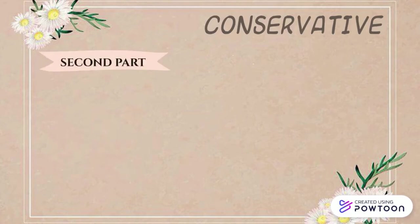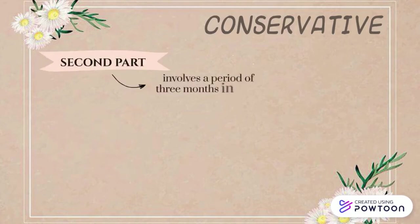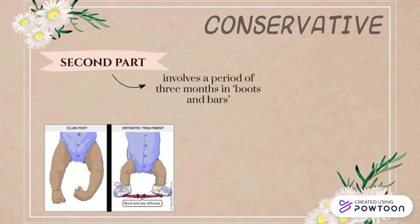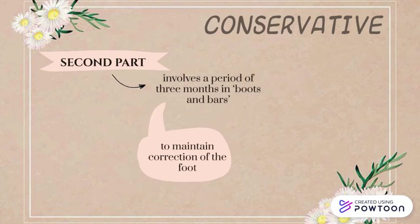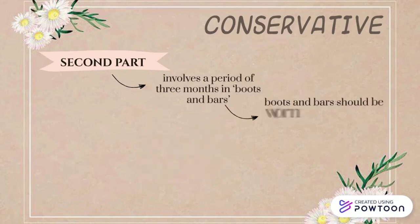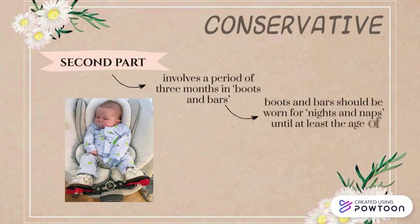The second part, which is the maintenance of correction, involves a period of 3 months in boots and bars. This is to maintain foot abduction and to maintain the correction of the foot. The boots and bars should be worn for nights and naps until at least the age of 4 years old.